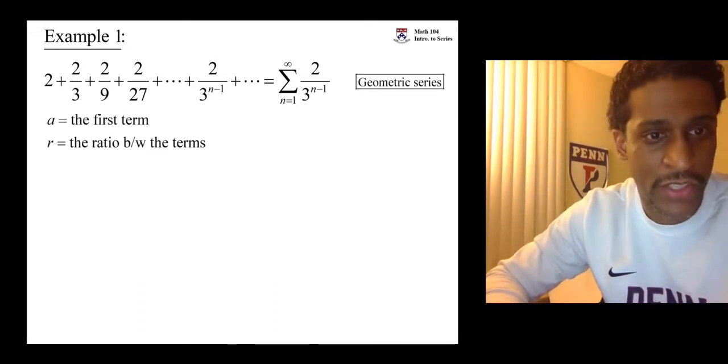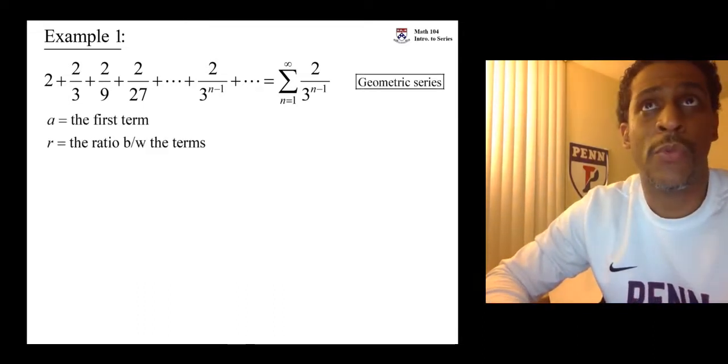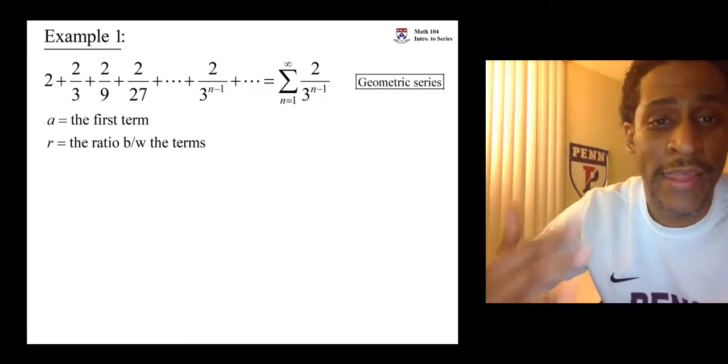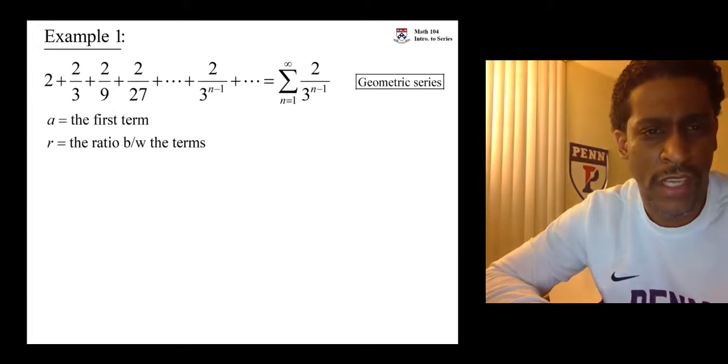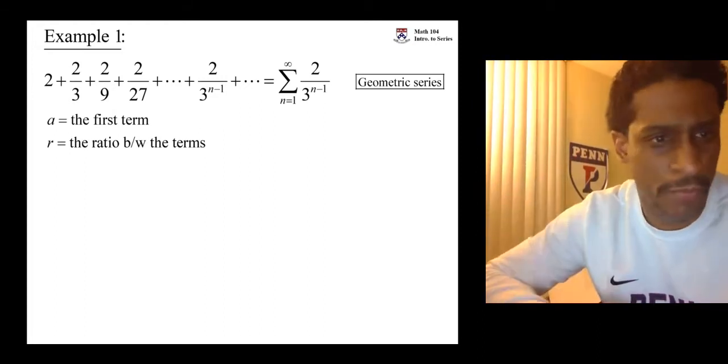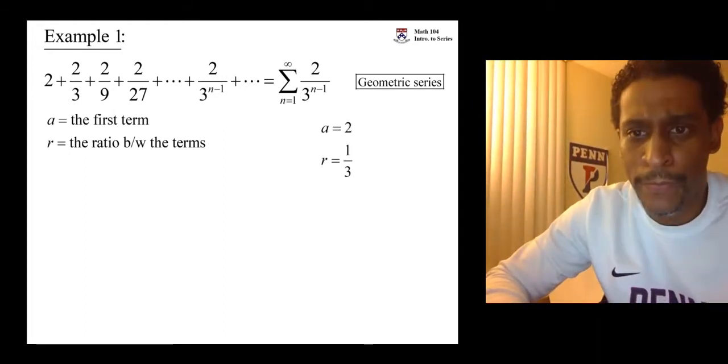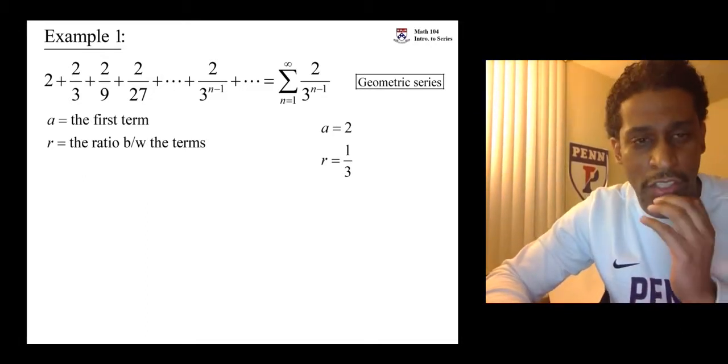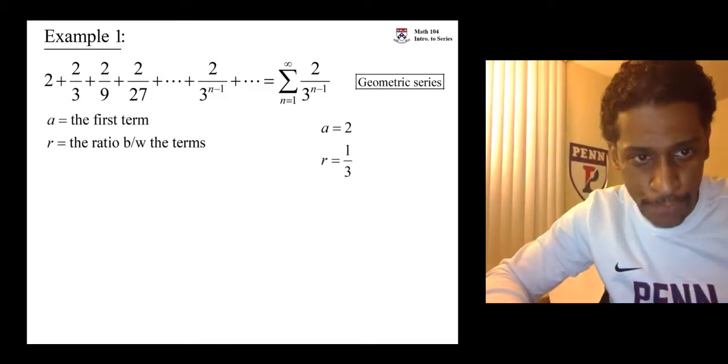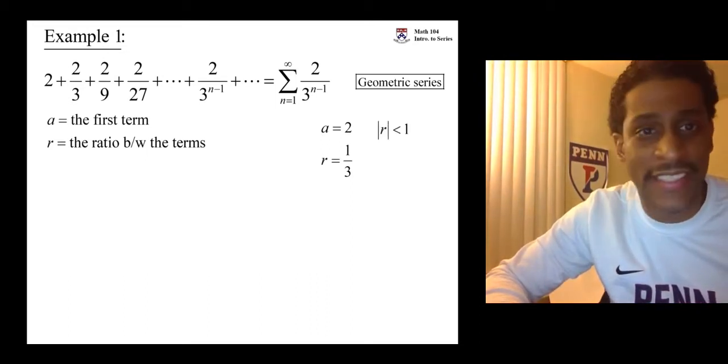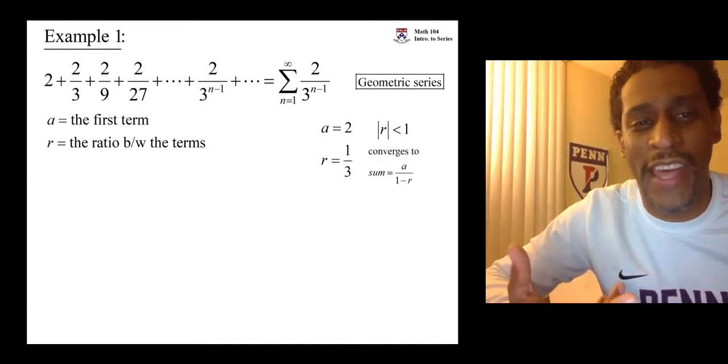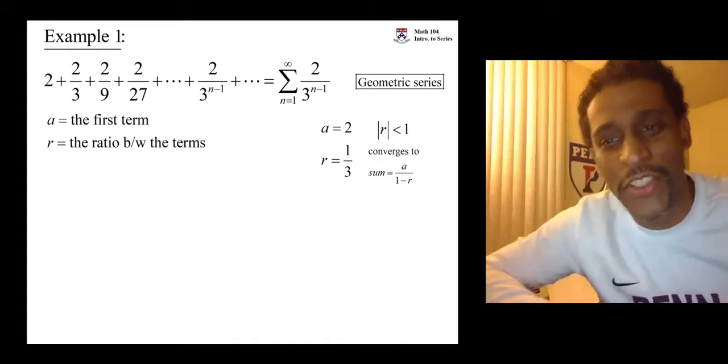So what we have is a geometric series, and we have a ratio r which is 1 third. The first term? That's a 2. How do we know whether the geometric series converges or diverges? It's based on the value of r. If the absolute value of r is less than 1, the series will converge. Even more than that, we know what the series converges to.